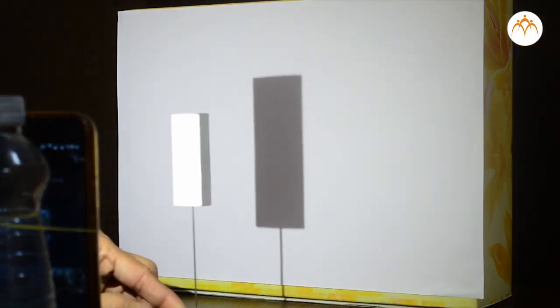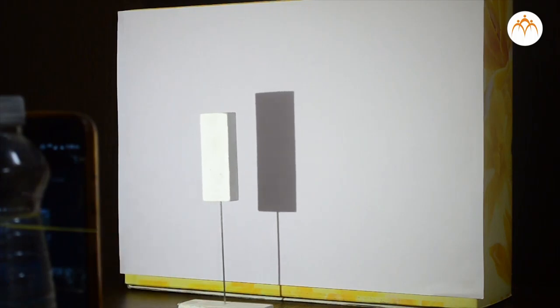I will attach my phone to the bottle so that it can be moved easily. Flashlight of the phone can be used as light source or torch. Let me take this eraser and place it between torch and the box. What will happen?